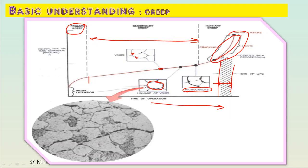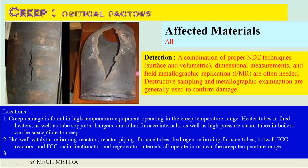This is an enlarged view of the microstructure showing linkage. Small voids are getting connected to each other and forming cracks. The black features represent voids, and when they connect they form cracks. This is the void formation visible at the microstructure level. This is the basic understanding of creep.